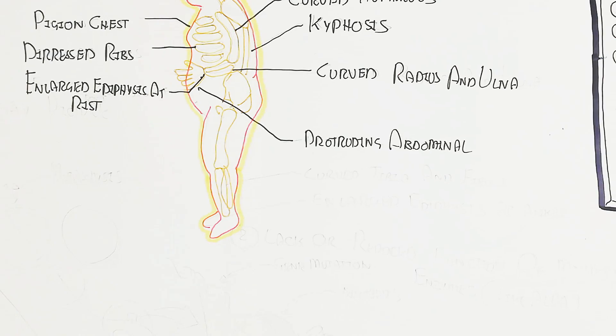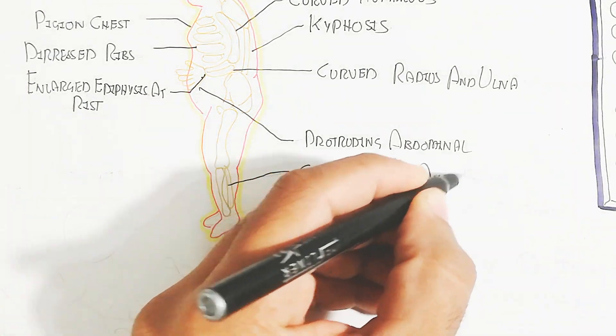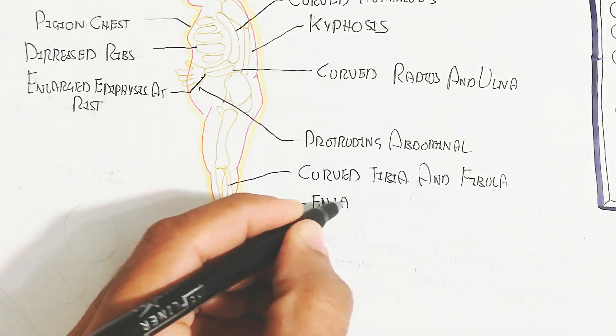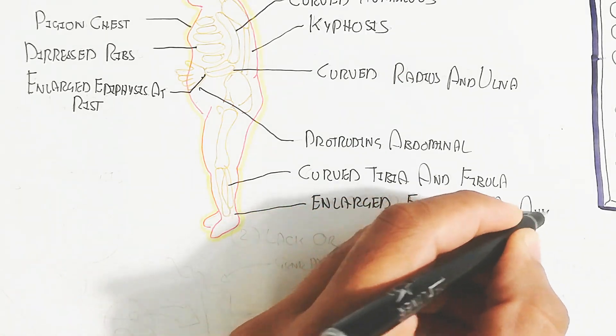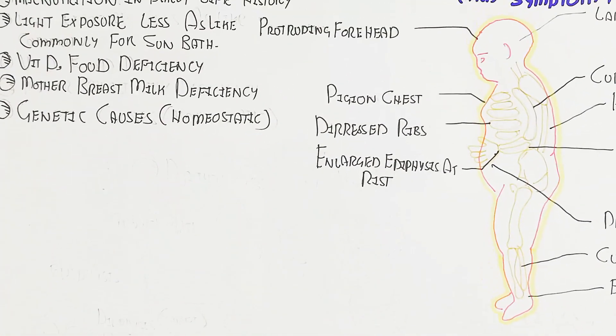Here I am understanding about the curved tibia and fibula, also the part for the walking problem, and enlarged epiphysis at ankle.